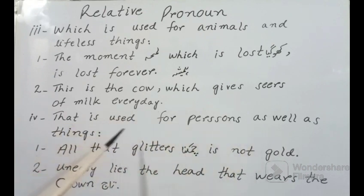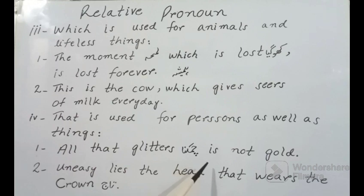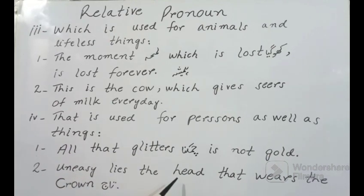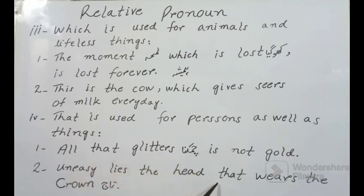Fourth point: 'that' is used for persons as well as things. Example one: 'All that glitters is not gold' — ہر چمکنے والی چیز سونا نہیں ہوتی. Example two: 'Uneasy lies the head that wears the crown' — جو سر تاج پہنتا ہے وہ بے چین رہتا ہے، یعنی ہر مشکل کے ساتھ آسانی ہوتی ہے. ان دونوں sentences میں 'that' کا استعمال دیکھا.